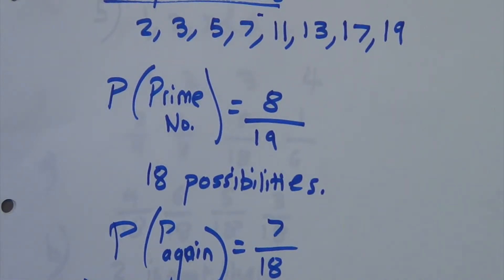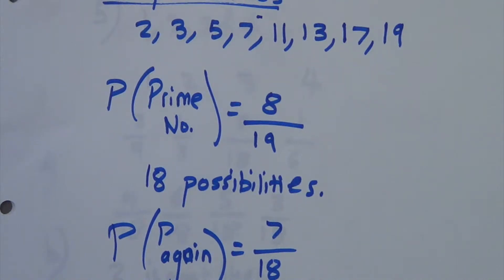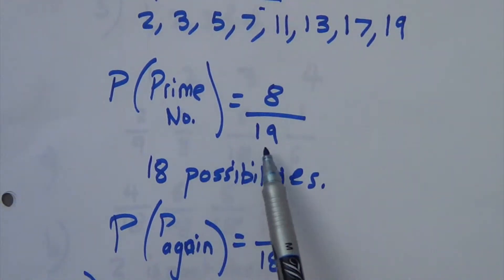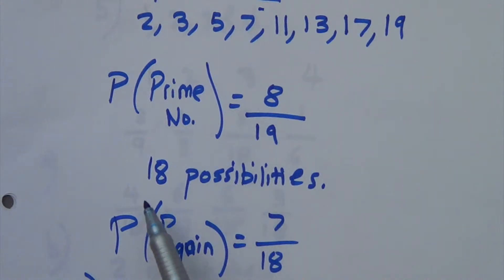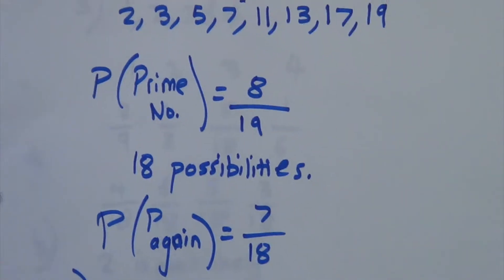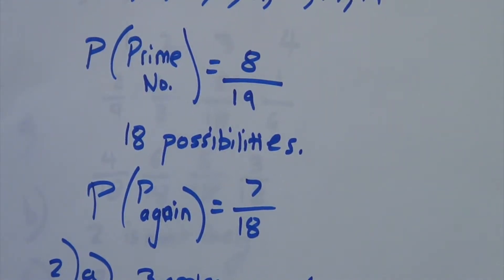Now, the next question is, what is the probability that the next guest gets a prime number room? So this time, instead of the 19 original possibilities, we have got 18 possibilities because one room has been taken. So, the probability that it will be prime again is going to be 7 over 18.